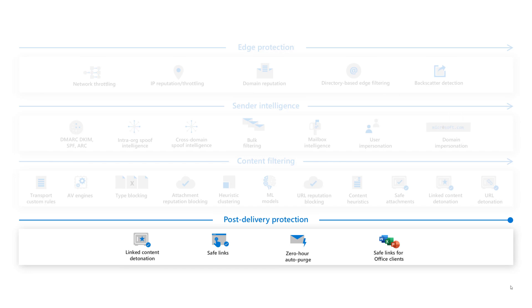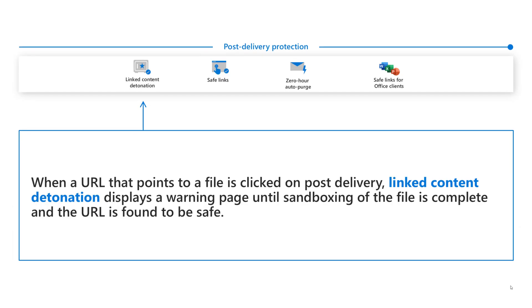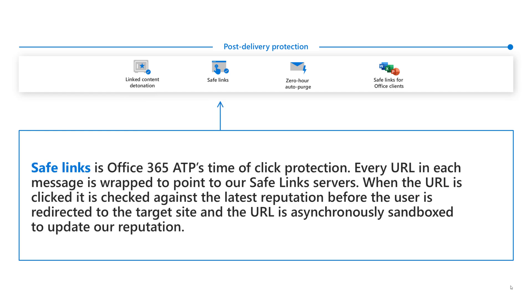Now let's talk about post-delivery protection. When a URL that points to a file is clicked on post-delivery, linked content detonation displays a warning page until sandboxing of the file is complete and the URL is found to be safe. Safe Links is Office 365 ATP's time-of-click protection. Every URL in each message is wrapped to point to Safe Links servers. When the URL is clicked, it is checked against the latest reputation before the user is redirected to the target site, and the URL is asynchronously sandboxed to update the reputation.